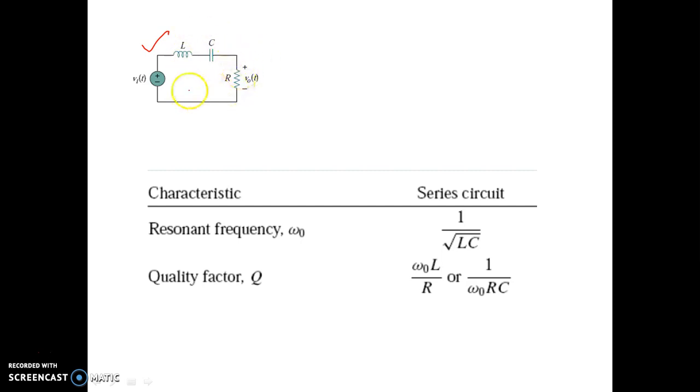So let me start. This is a series RLC circuit and we are taking the output across the resistor. You know well from my previous video that if we take output across the resistor, that is nothing but a band pass filter. If we take output across the LC combination, then that is a band stop filter.